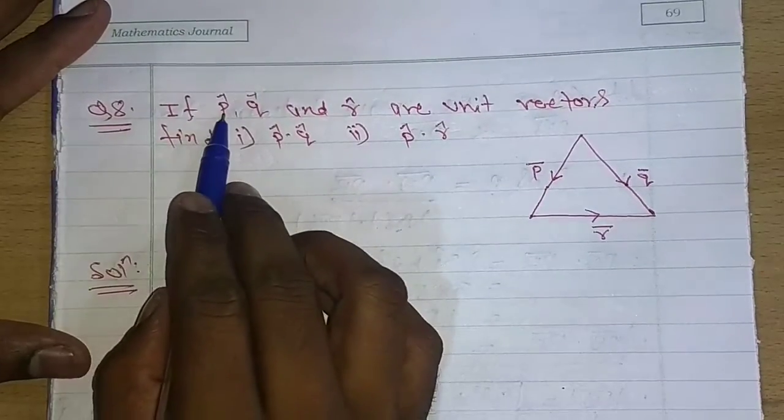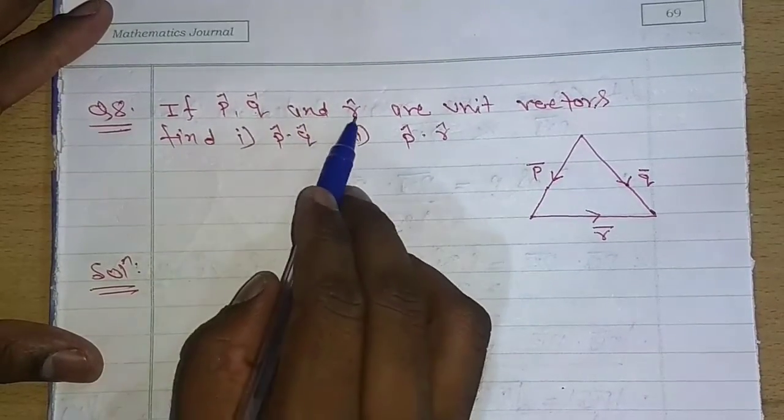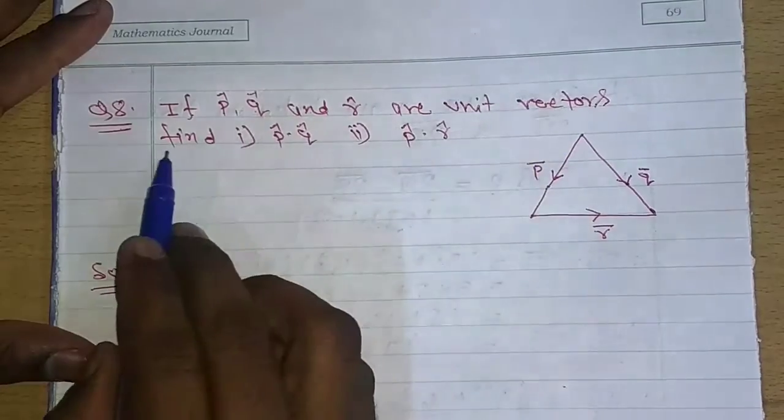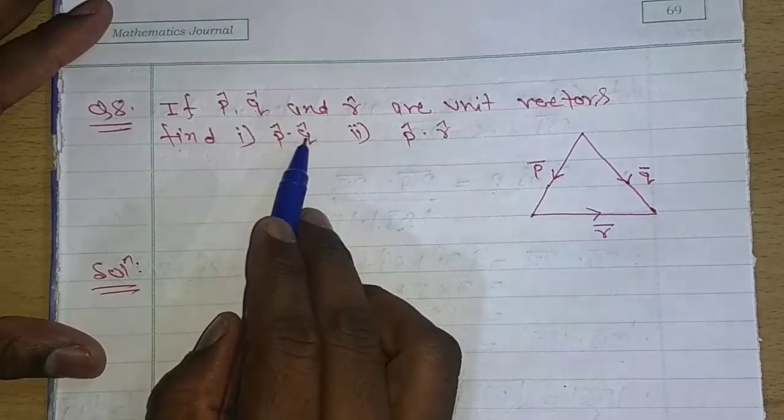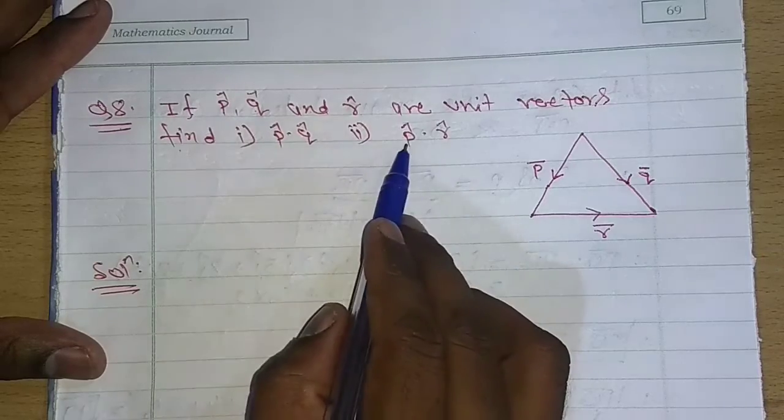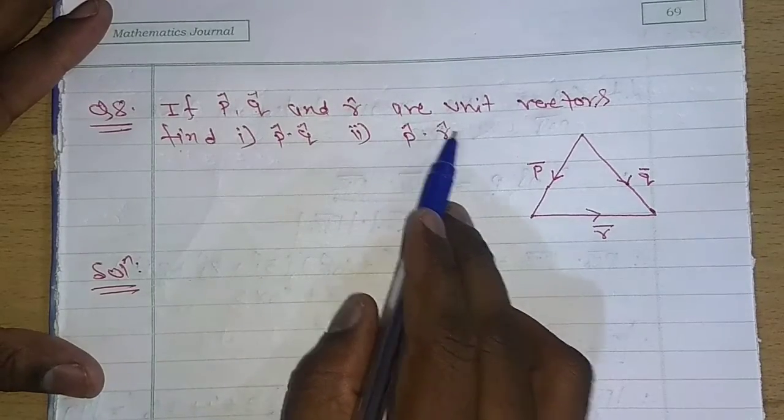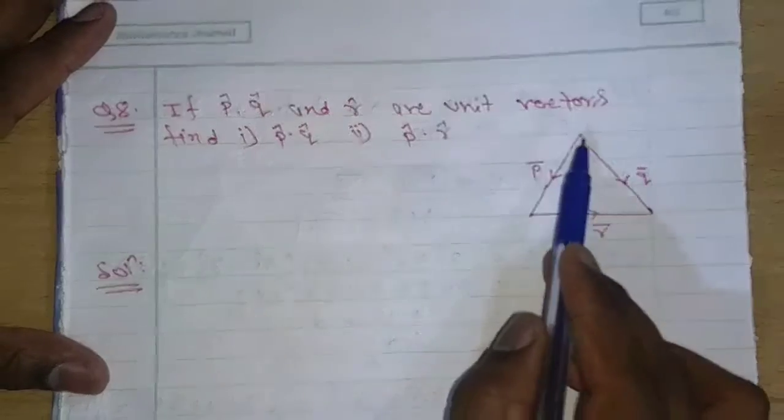Question number 8: If p cap, q cap, and r cap are unit vectors, then find first p cap dot q cap, second is p cap dot r cap. For this we have two figures here, this is the triangle.